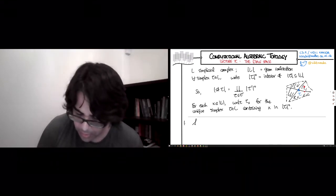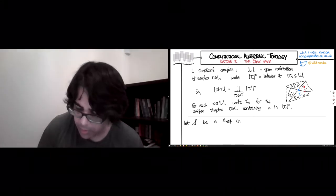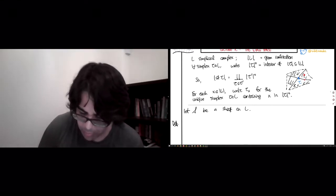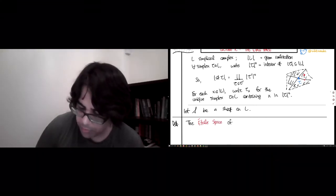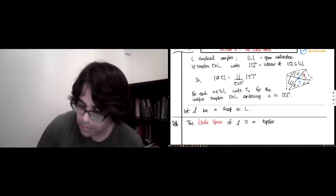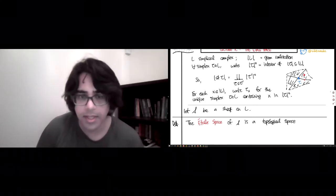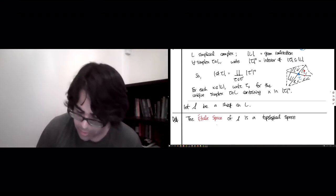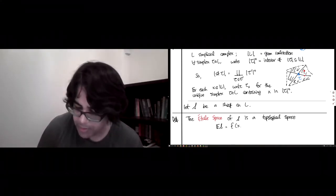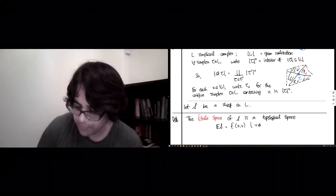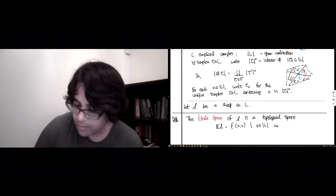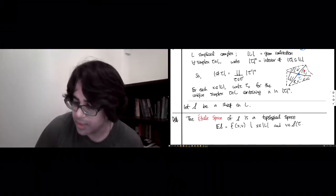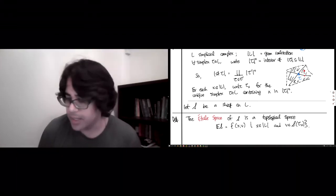And so let s be a sheaf on L. And here is one of the main definitions of this lecture. The étal space of s is a topological space. So let's define the set first, and then we will define the topology. So I'll write it as Es. And this consists of all pairs x, v, where x is in the geometric realization of L and v is a vector in the stock assigned by s to the unique simplex whose interior contains the point x. So that's the set.